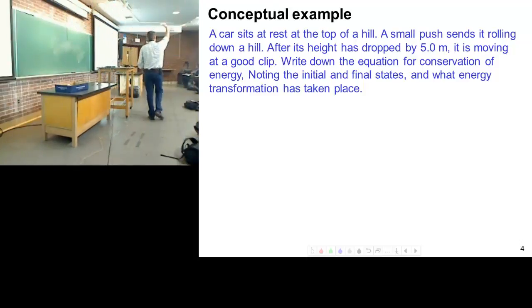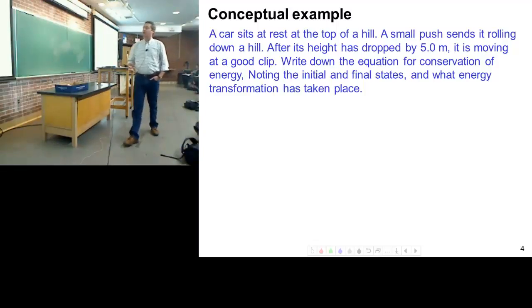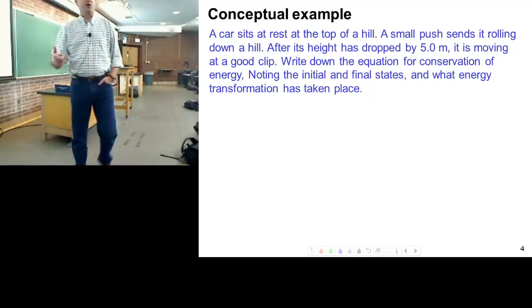Its initial velocity is zero, right? So a car sitting on top of a hill with a velocity of zero. Tiny push sends it rolling down the hill. After it's gone down five meters, it's moving at some speed.